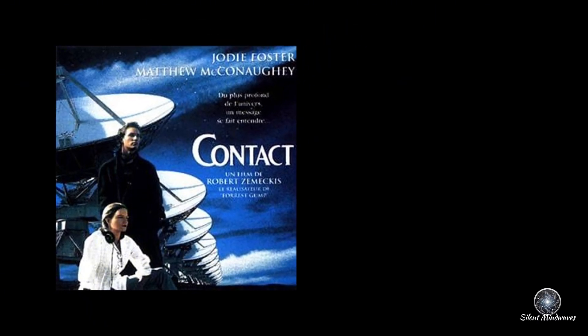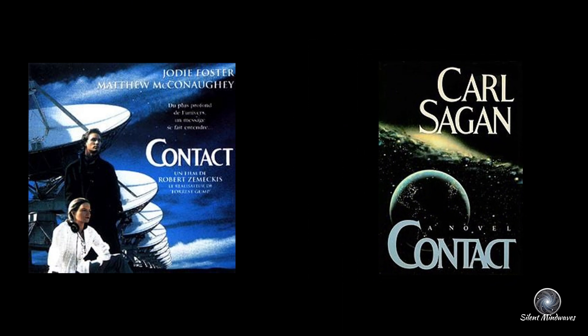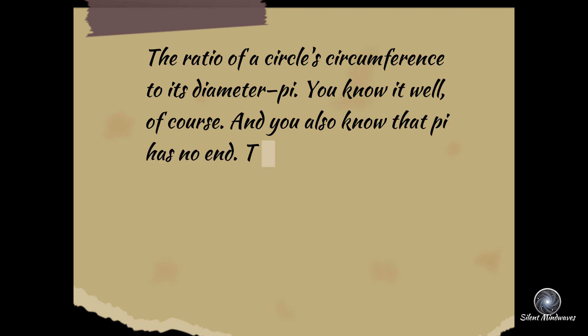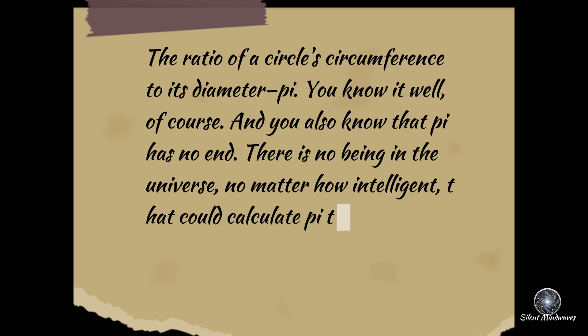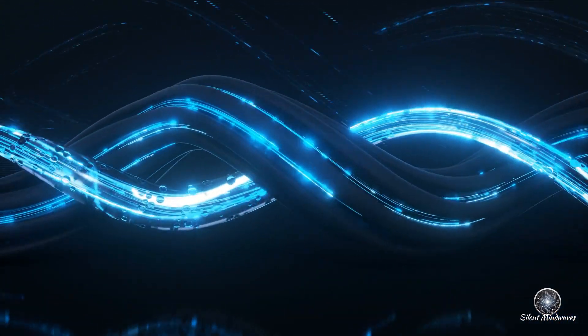Have you seen the movie Contact? It's based on Carl Sagan's novel of the same name. In one part of the novel, this line appears: The ratio of a circle circumference to its diameter, pi. You know, well, of course. And you also know that pi has no end. There is no being in the universe, no matter how intelligent, that could calculate pi to its final digit. It's an infinite sequence of numbers. I spent 40 years searching for patterns in pi. I found nothing.